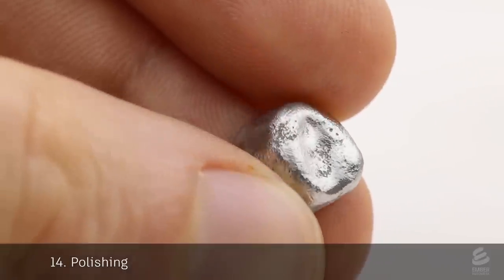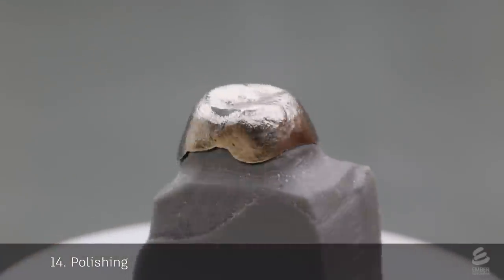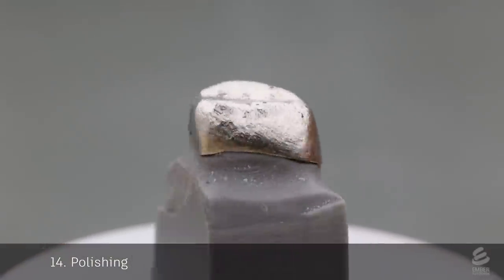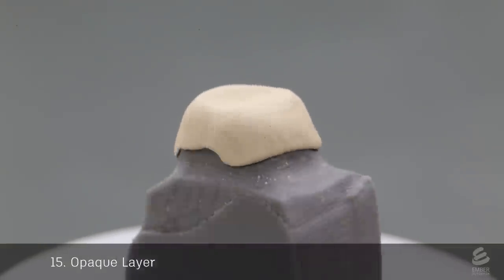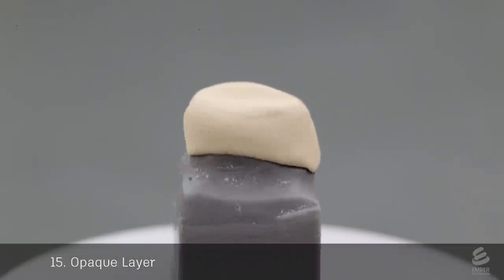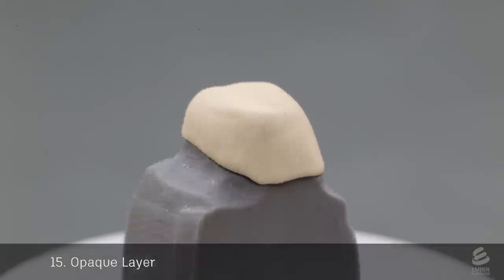These castings then go through a polishing step. This metal casting will form the substructure of the final crown. Next, an opaque layer is applied to the casting. It acts like a primer. It covers up the gray color of the metal and also increases adhesion with the porcelain layer.